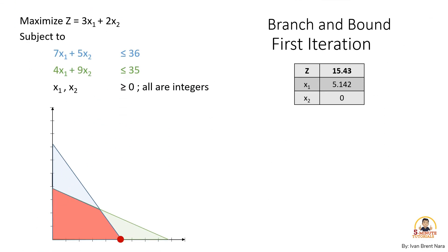In order to come up with an integer solution, let us use the branch and bound method. Have you ever wondered why it is called the branch and bound method? It is because in this method we will repeatedly divide and bound the new solution space until it fulfills an integer value. We can make several iterations until we have an integer solution.